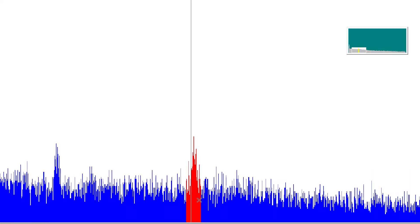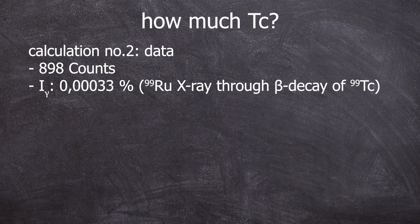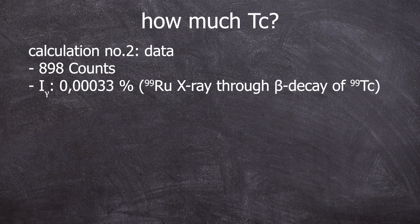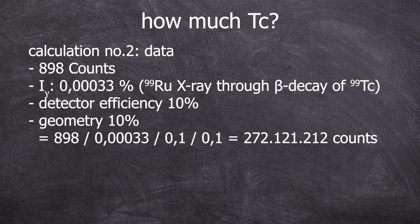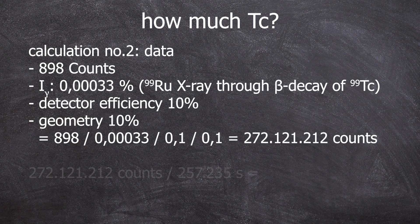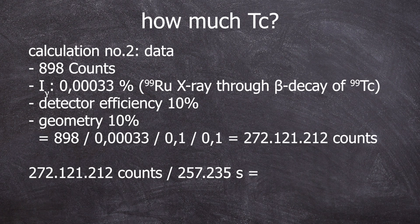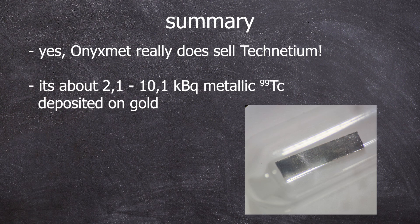Calculation number two, based on the measurement data. We have 898 events in the 19.2 kiloelectronvolt peak, with a probability of occurrence of this line of 0.00033%. Let's say the efficiency of the detector is around 10%, and due to this really extremely unfavorable measurement geometry, we only measure around 10% of that. Then we come to 272,121,212 events that should have been measured. With a measurement time of 257,235 seconds, we get about 1,058 becquerels. So now we have set a rough framework which amounts of technetium we are talking. So anything between 2,000 and 10,000 becquerels.